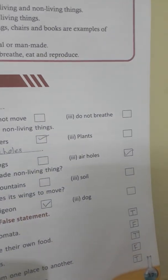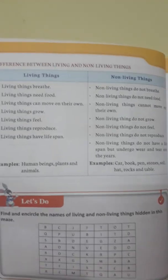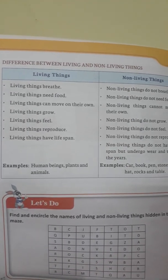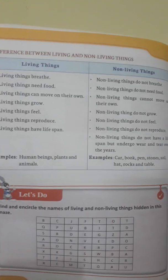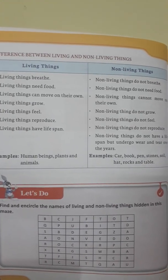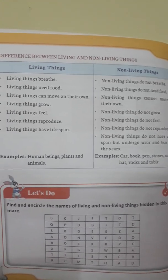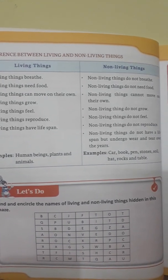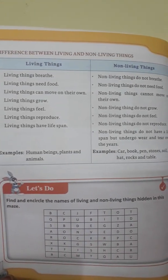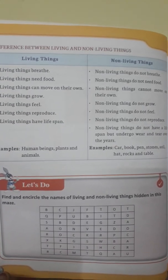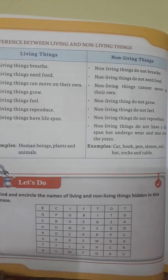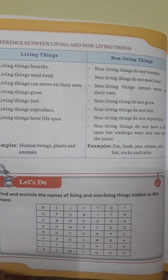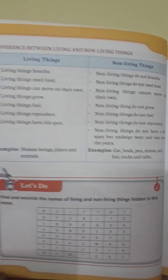Coming to the difference portion of living and non-living things — all the points are already discussed, I will just brief them out. Living things breathe, whereas non-living things do not breathe. Living things need food; non-living things do not need food. Living things can move on their own; non-living things cannot. Living things grow; non-living things do not grow. Living things feel; non-living things do not feel. Living things reproduce; non-living things do not reproduce.